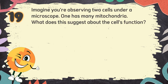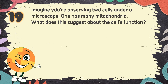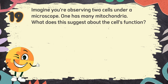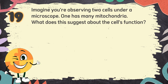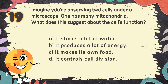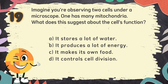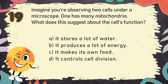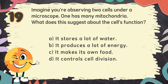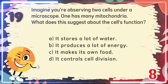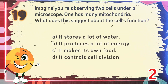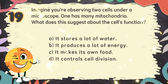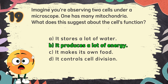Number 19: Imagine you're observing two cells under a microscope. One has many mitochondria. What does this suggest about the cell's function? The choices are: A. It stores a lot of water, B. It produces a lot of energy, C. It makes its own food, D. It controls cell division. The correct answer is B. It produces a lot of energy.